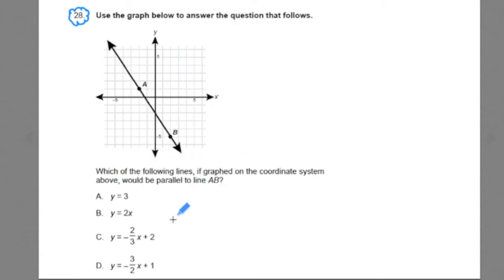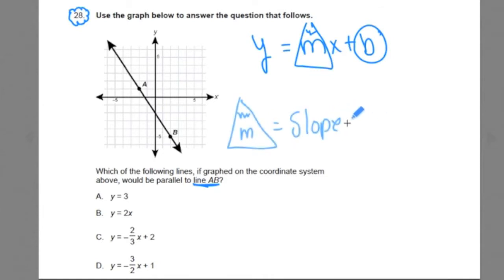Now there's two very important pieces of information in this question. First, we're talking about a line. AB is a line. And when we think about lines, we can represent them as y equals mx plus b. This is the equation for a linear function. Our m here is the slope. Our b is our y-intercept. And remember, slope is equal to rise over run with the change in y's over the change in x's.